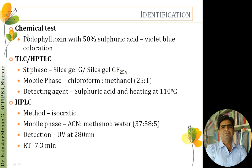For TLC or HPTLC, the fraction or purified podophyllotoxin is applied on a stationary phase plate — silica gel G or silica gel GF254 — and run in a mobile phase of chloroform:methanol in a 25:1 ratio. After running, the plate is visualized by spraying with sulfuric acid and heating at 110°C. Podophyllotoxin produces a violet color spot. The Rf value obtained is matched with a standard reference to confirm the identity of podophyllotoxin.